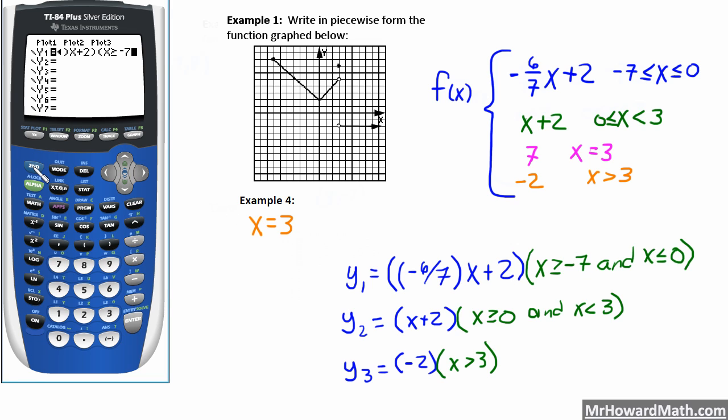Go over to logic this time to the right, choose and, the first option there, and, and now put in x less than or equal to 0. So x, second math to get to the test menu.